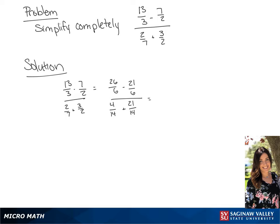Giving us 4 over 14 plus 21 over 14. We are going to solve the numerator, which we get 5 over 6, and the denominator, if we solve that, we get 25 over 14.